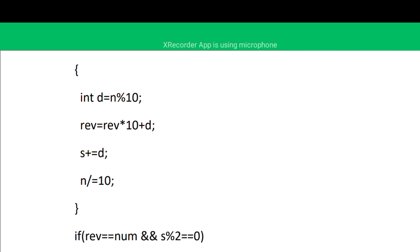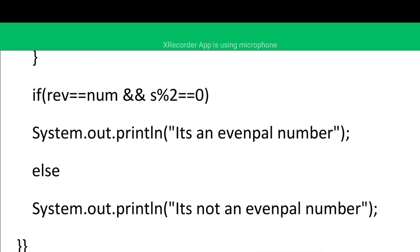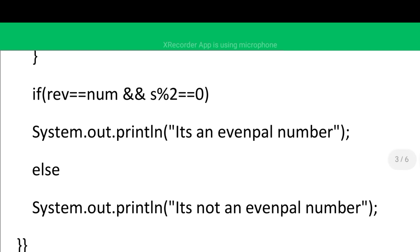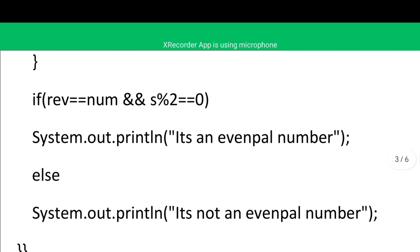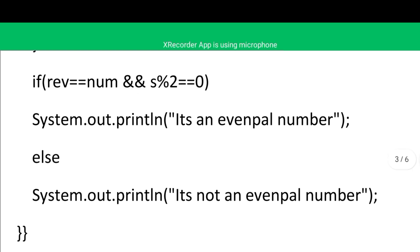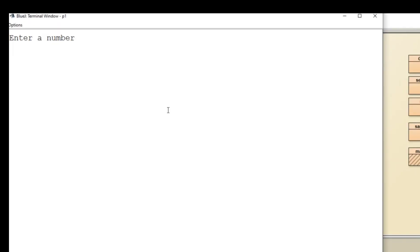When n becomes 0, we have the reverse number and the sum of digits. If reverse equals the original number stored in 'num', it is a palindrome. Using the AND operator, two conditions must both be true for Even Pal: the number must be a palindrome, and sum of digits modulo 2 must equal 0 (even). If both conditions are true, it is an Even Pal number; otherwise, it is not. Execution: entering 121 gives 'it is an Even Pal number'.